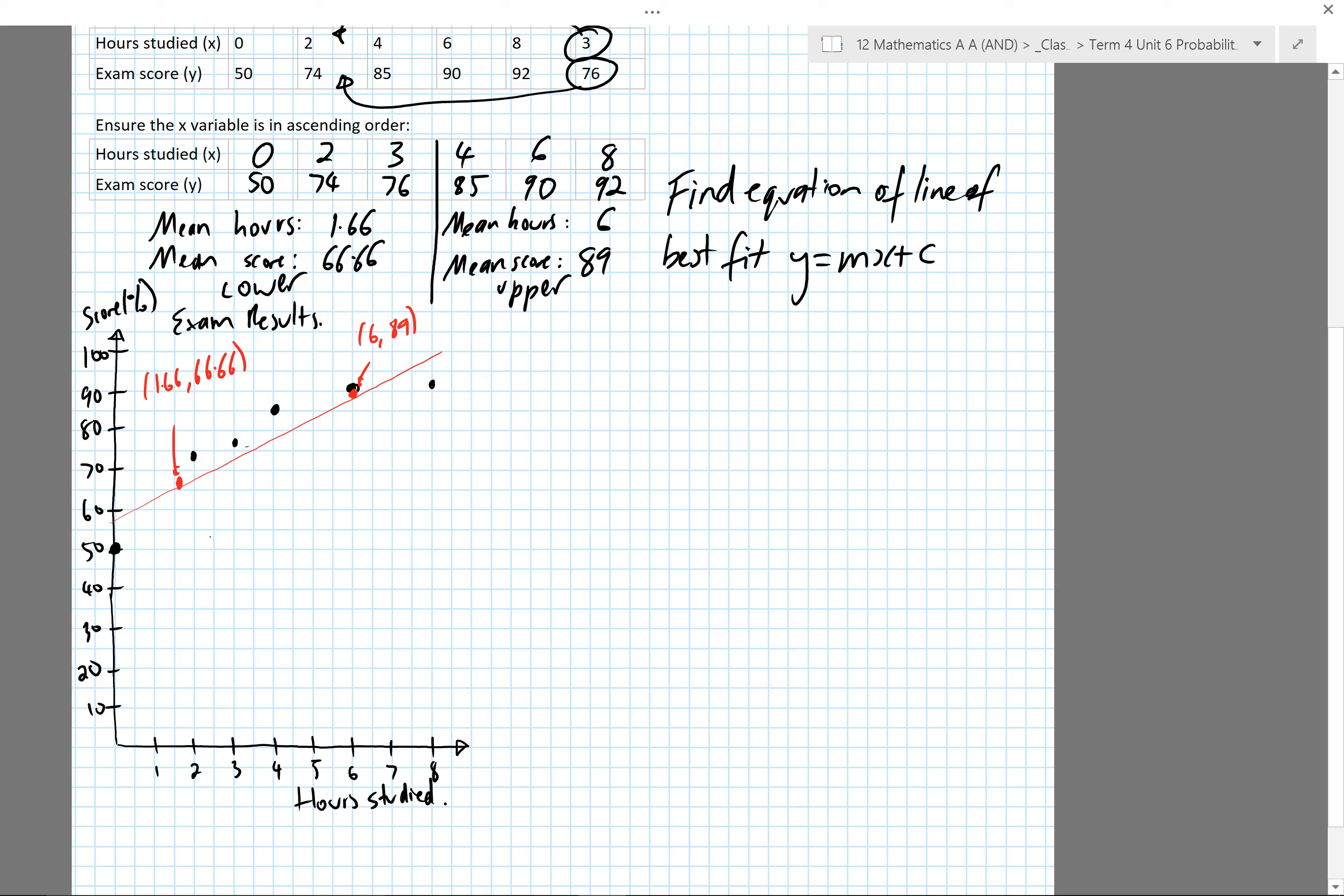First step is to find the gradient, so I'll find m first. I've got a formula for m: y2 minus y1 over x2 minus x1. This is x1, y1, this is x2, y2. I'll just go ahead and substitute these points in. So my difference in my y's divided by my difference in my x's. I'll get a gradient or slope of 5.16.